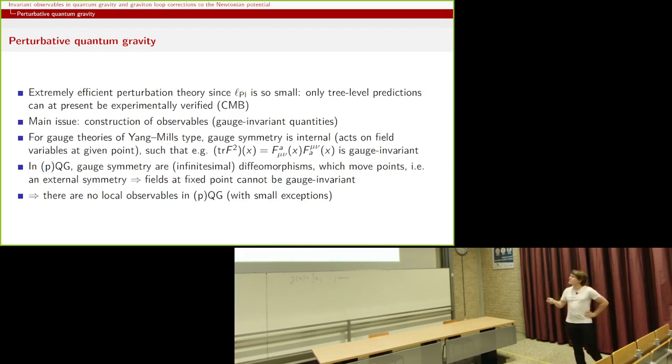Because the gauge symmetry is very different from the usual ones. And we all know Yang-Mills theory, so that's an internal gauge symmetry. That means it acts on the field variables at any given point. So, for example, then you can take things like the trace of f squared, so f_a^μν f_aμν. That's the gauge invariant quantity at one single point. And then when we compute these things, there's a mathematical theory behind it. Cohomology theory is very nice.